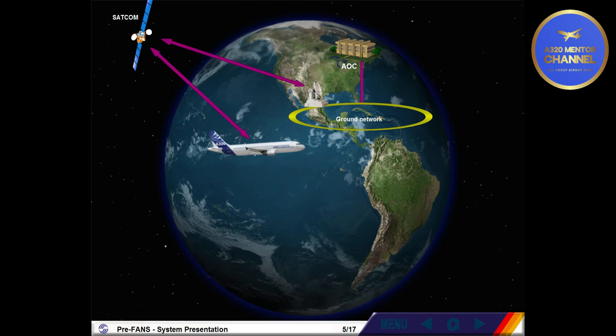The AOC function provides the crew with ACARS equivalent functionalities and more, such as winds aloft requests, free text message exchanges, diversion, delay, refueling, flight reports, aircraft data from CMS, cabin terminal, etc.